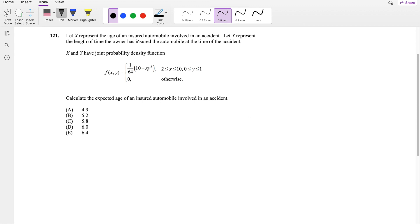So X represents the age of an insured automobile and we're asked to find the expected age of an insured automobile. So we're basically asked to find the expected value of X. We know that the expected value of X is equal to the integral from negative infinity to infinity of the marginal density function of X times X dx. But we're given the joint distribution function, so we have to first find what the marginal distribution is.